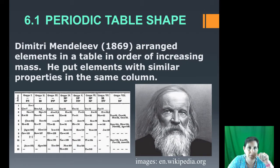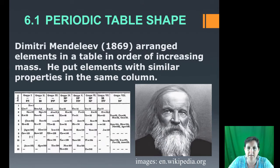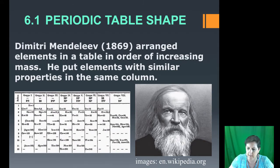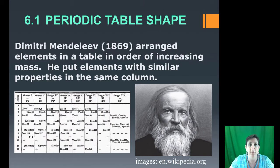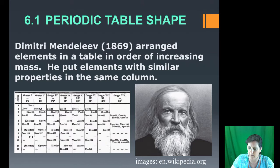The Periodic Table was first arranged by Dmitry Mendeleev, a Russian. He put elements with similar properties in the same columns. It didn't last very long because the groups weren't really in order of how they reacted similarly. But this was the first Periodic Table and Mendeleev does get credit for being the first person to try to put the elements in a table.